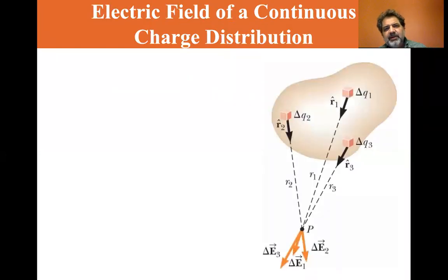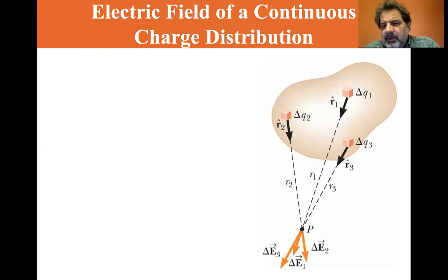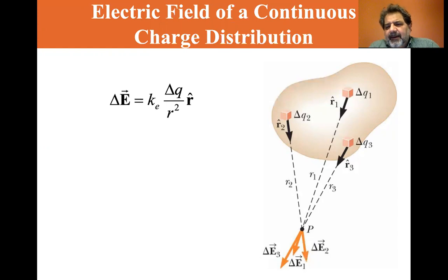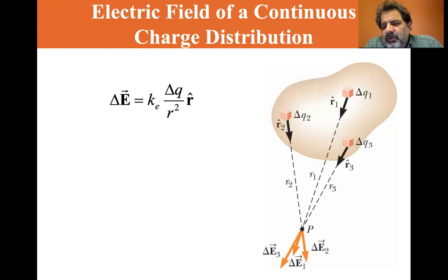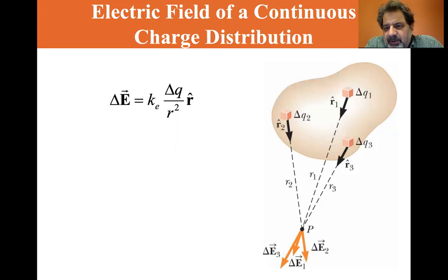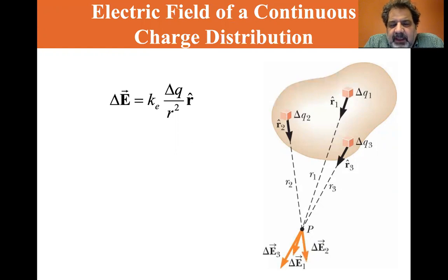We're going to talk about the electric field of a continuous charge distribution. This beige shape here is a charge distribution, and the way we find the effect of this charge distribution is by taking individual little charges — Delta Q1 at unit vector R1, Delta Q2 at R2, and Q3 at R3. The Delta E is equal to KE times Delta Q over R squared times R-hat — that's just Coulomb's Law.